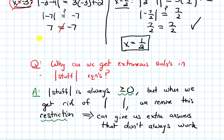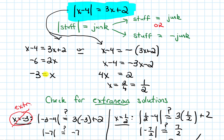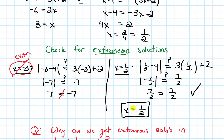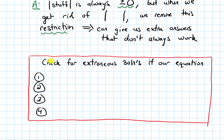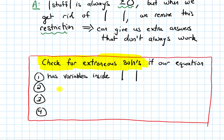That happened in this example. Sometimes when checking for extraneous solutions, all answers will work; sometimes none will; and sometimes, like here, some will and some won't. To summarize: we check for extraneous solutions when our equation has variables inside an absolute value, or when it has variables inside even roots — such as a square root or fourth root.